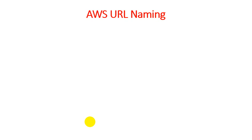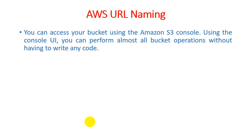In Amazon Web Services, you can access your bucket — a data web service through which a client accesses facilities through browsers or in the form of web services — using the Amazon S3 (Simple Storage Service) console. Using the console's UI (user interface), you can perform almost all bucket operations without having to write any code. It is nothing but AWS URL naming.